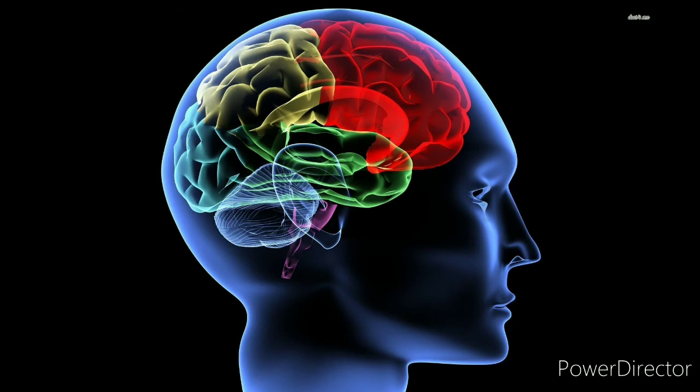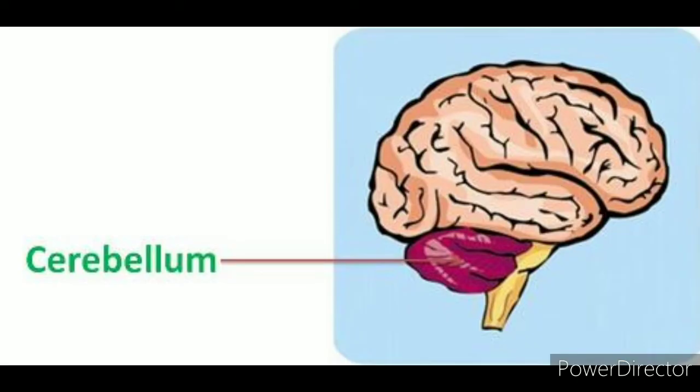Below the cerebrum lies the cerebellum. It coordinates the action of our muscles, regulates them, and helps them work together. It also maintains the balance of our body.